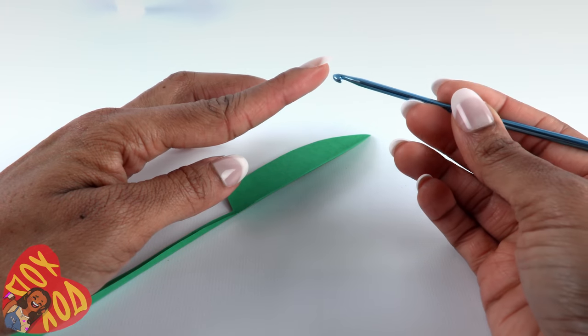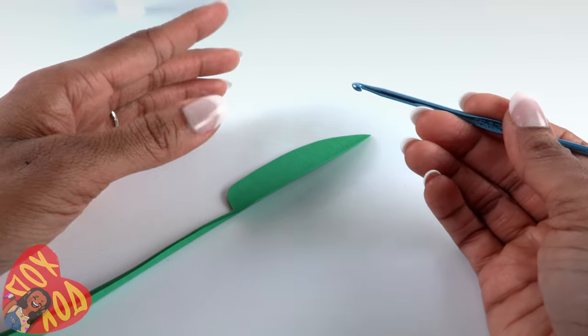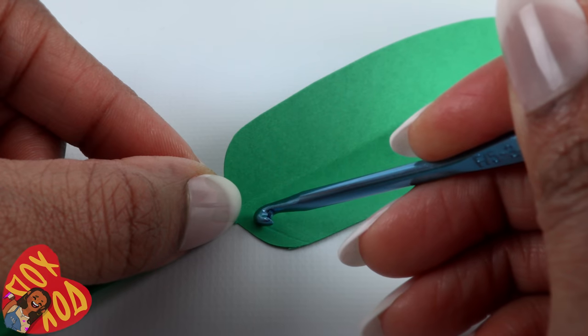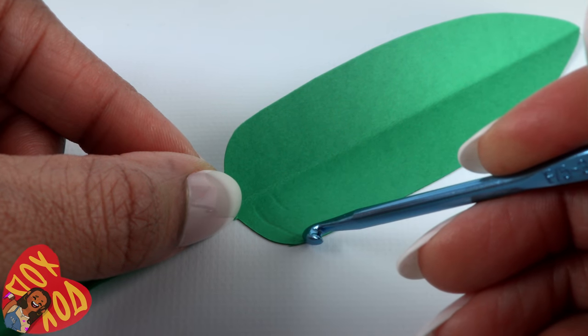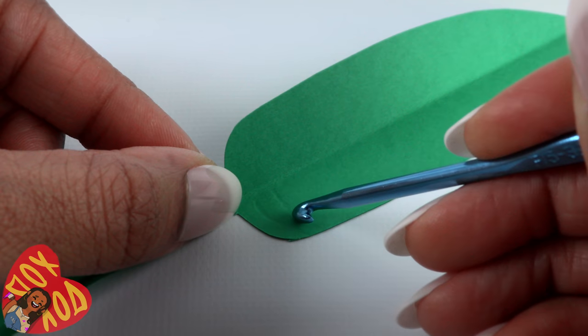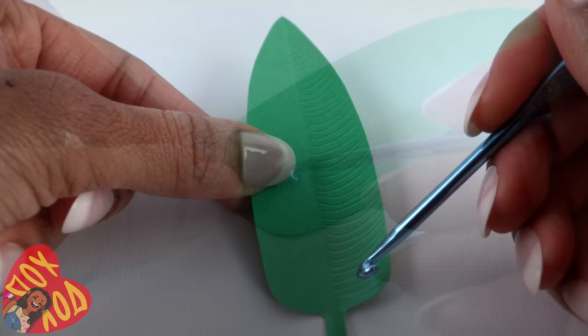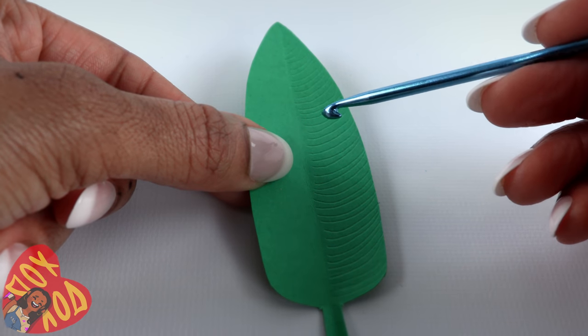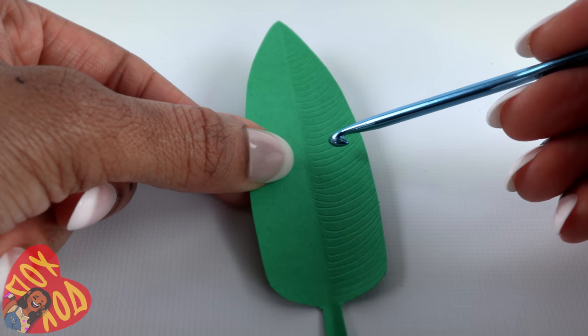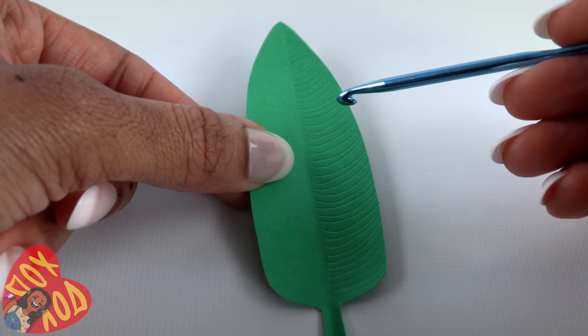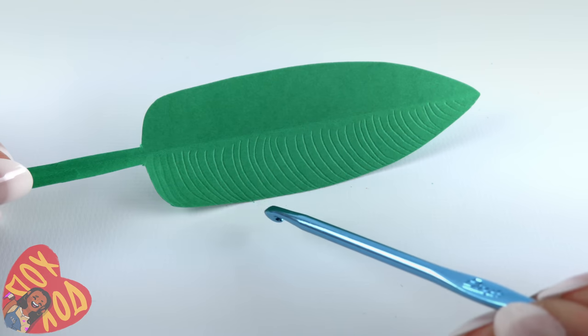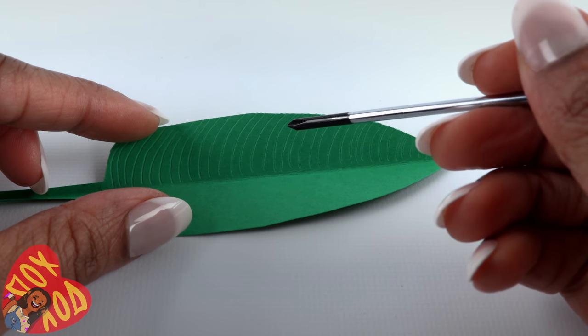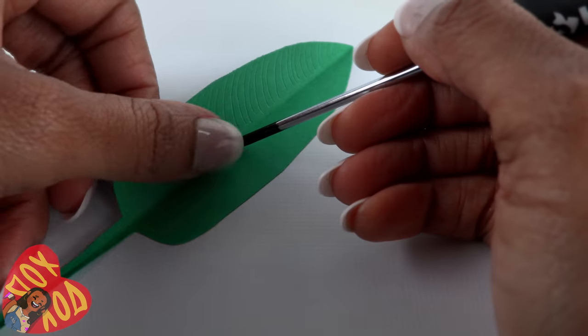Now I'm using the end of my crochet needle. You really just need something that you can make an impression into the leaf with. Pushing down firmly, I make curved lines on the side of the leaf, going all the way down. There is an embossing tool that you can use to do this, or a dotting tool, or a pen that no longer has any ink. Then repeat on the other side. And I just discovered that this little screwdriver works really good.